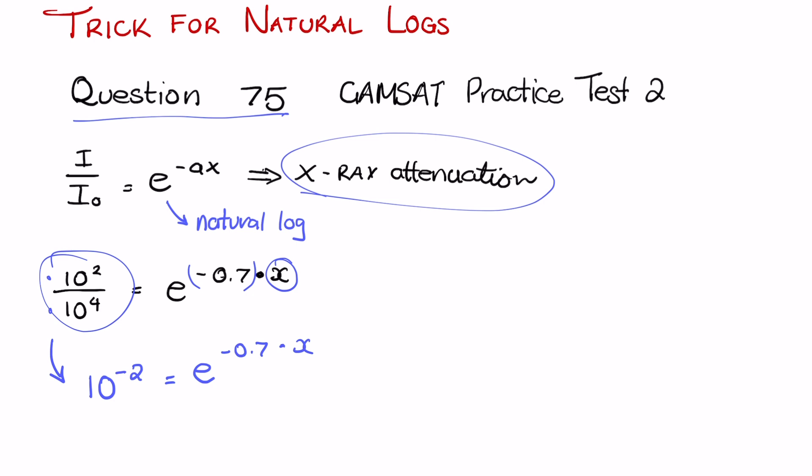Now in order to get rid of the e and bring this scientific notation down, we can natural log everything. So if we go ln(10⁻²) equals ln(e^(0.7×x)), and ln e is the exact same because natural log is essentially log e to a certain power. So ln e is log e to the e, and one of the log laws you should know is that anything that is log something by itself is just equal to 1.